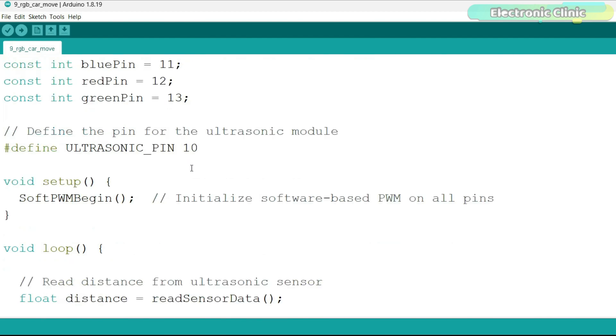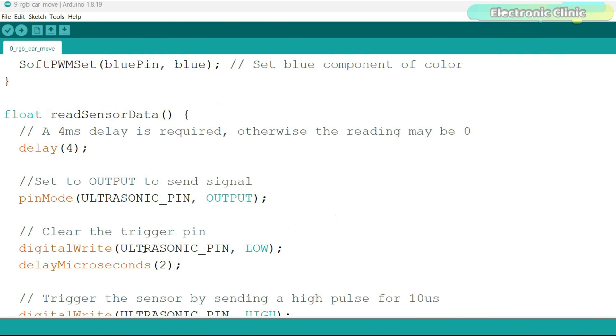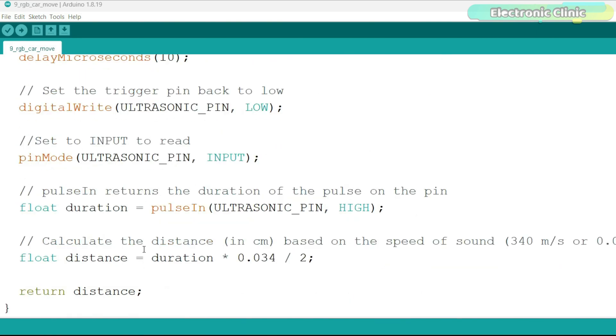This program is the combination of ultrasonic avoidance example and the RGB LED strip example. We simply measure the distance using the ultrasonic sensor and then use some if conditions to check the distance and then accordingly control the LED strips. The rest of the code you can see is exactly the same. Let's upload this program.